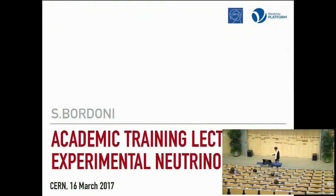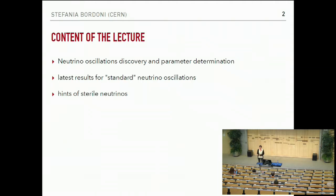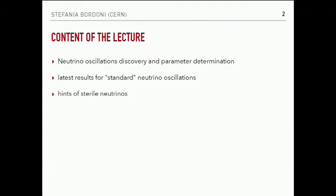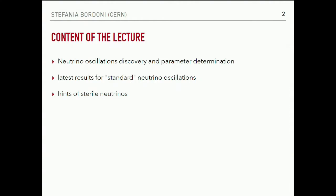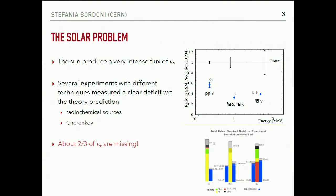Today is the second part of the experimental neutrino physics lectures. Yesterday was an introduction about mainly the detection techniques and how we see the neutrinos. Today I will focus more on the experimental results, with an overview first. The entire lecture will focus on oscillation measurements: first a review of the milestones that led to the discovery of this phenomenon, then an overview of the latest results about three-neutrino mixing oscillation, and then the hints we had of possible sterile neutrino existence.